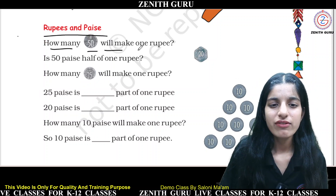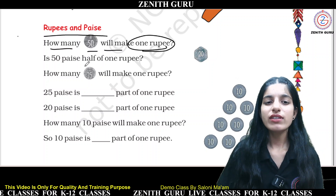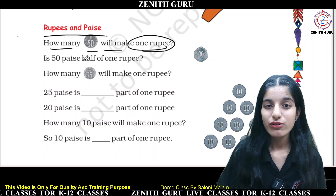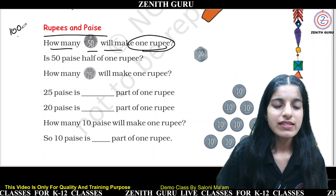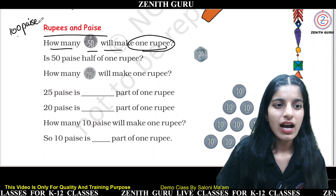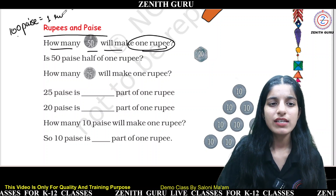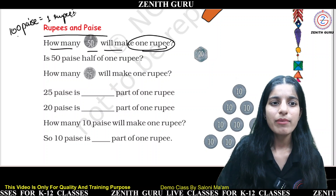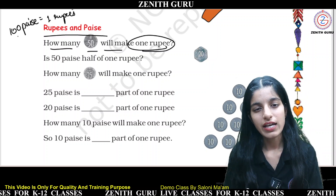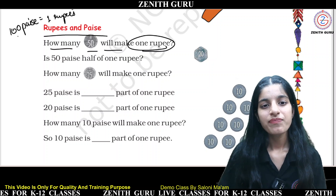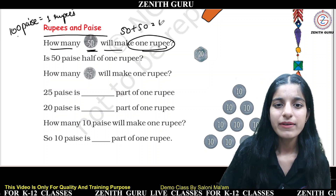How many 50 paise will make 1 Rupee? 50 paise and 50 paise — 50 plus 50 is 100. So 100 paise is equal to 1 Rupee. If you have 2 coins of 50 paise, what will become? 1 Rupee.